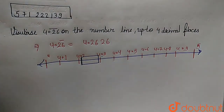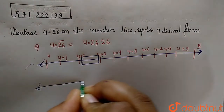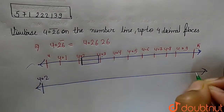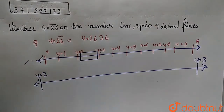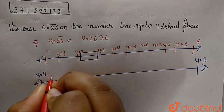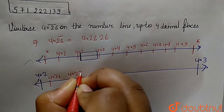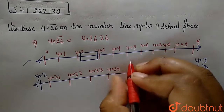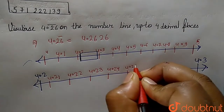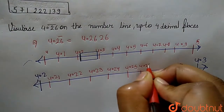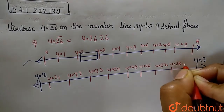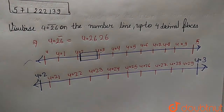Now let's draw a number line between 4.2 and 4.3. Here we have 4.2 and 4.3, and in between we will have: 4.21, 4.22, 4.23, 4.24, 4.25, 4.26, 4.27, 4.28, and 4.29.